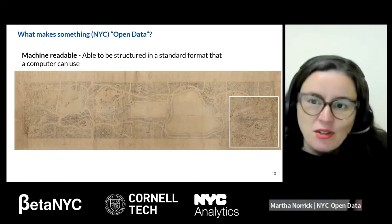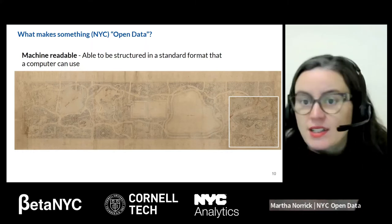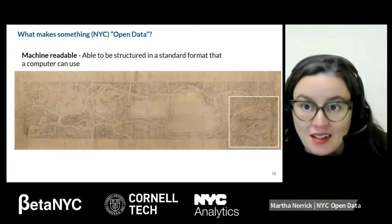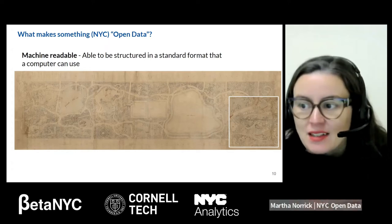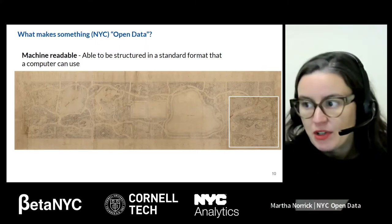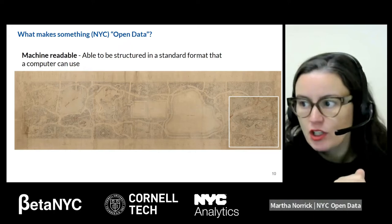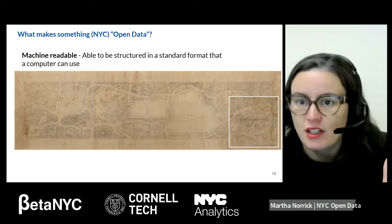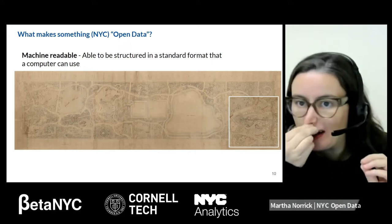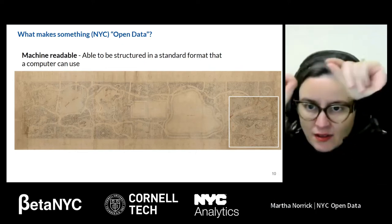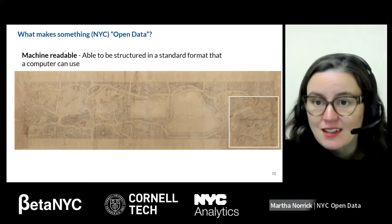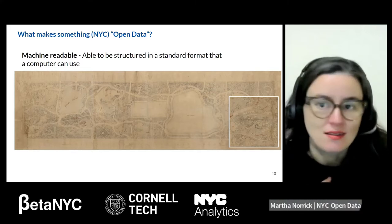For example, New York City Parks has a data set with one row for every tree in New York City, which is amazing. Each row represents a tree and each column represents some information about the tree — like the species, the size, and the latitude and longitude. So we can say exactly where in New York City that particular tree is, which still blows my mind.